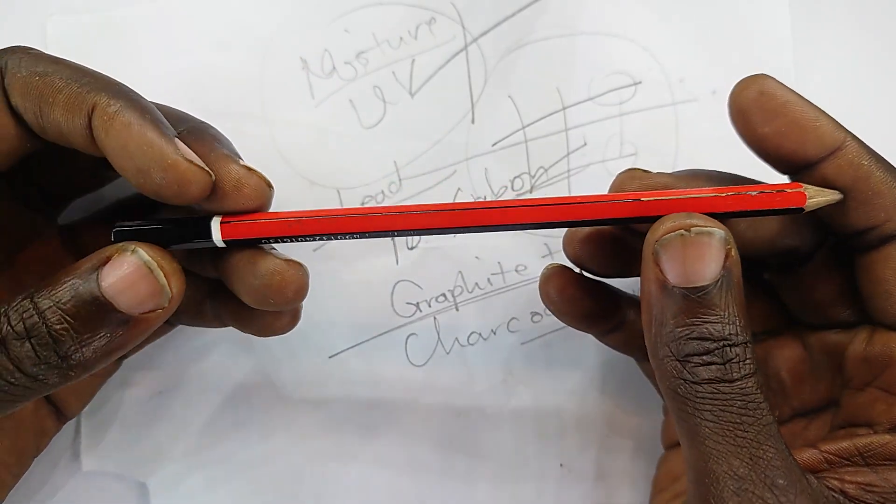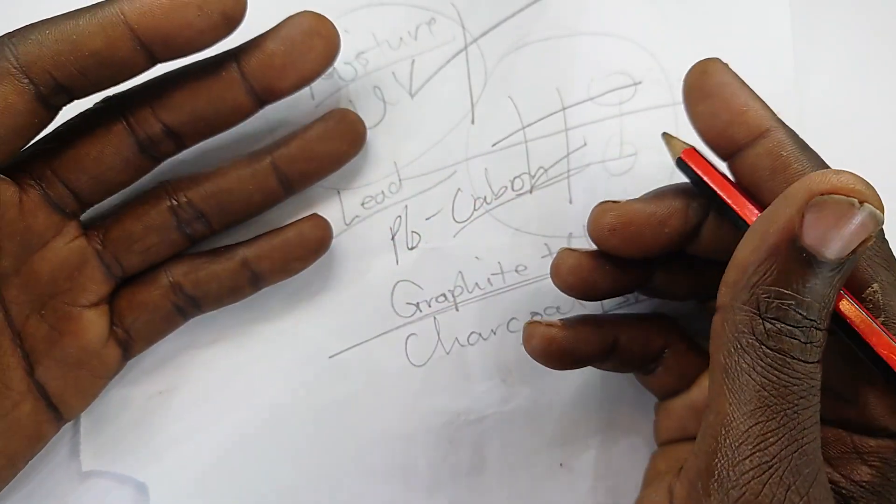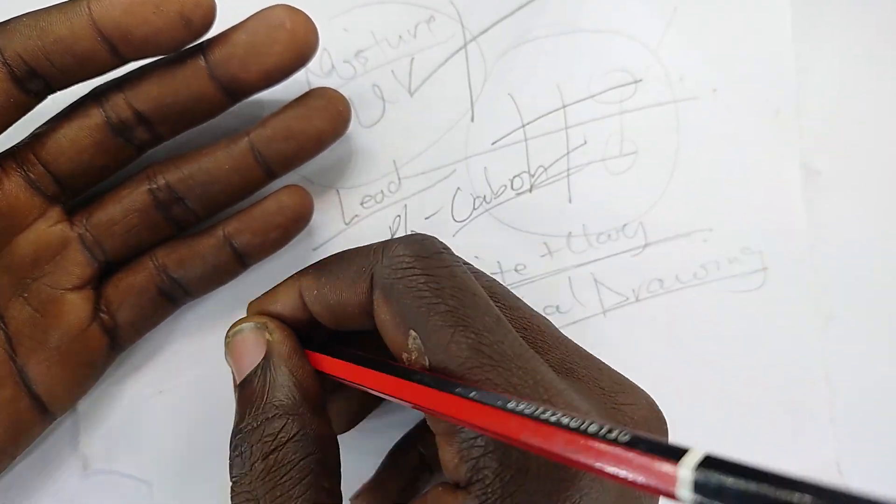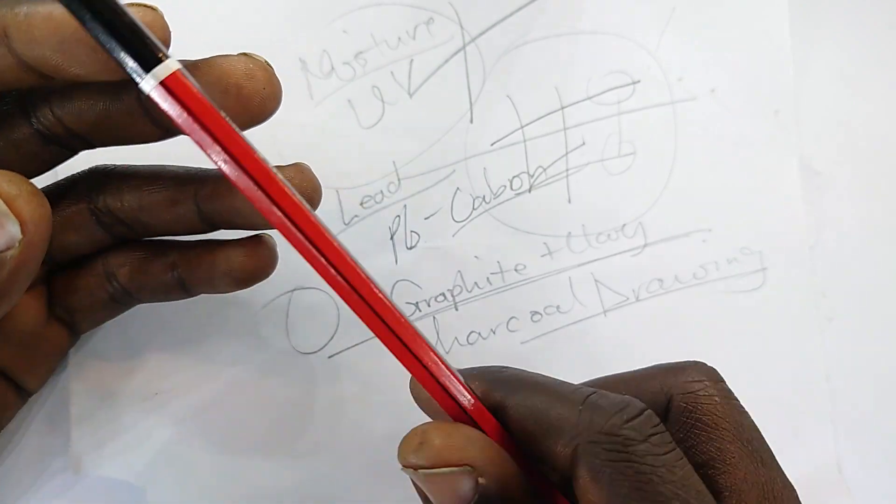Unlike the fountain pen or ballpoint pen that depend on gravity, surface tension to make markings on the ground.